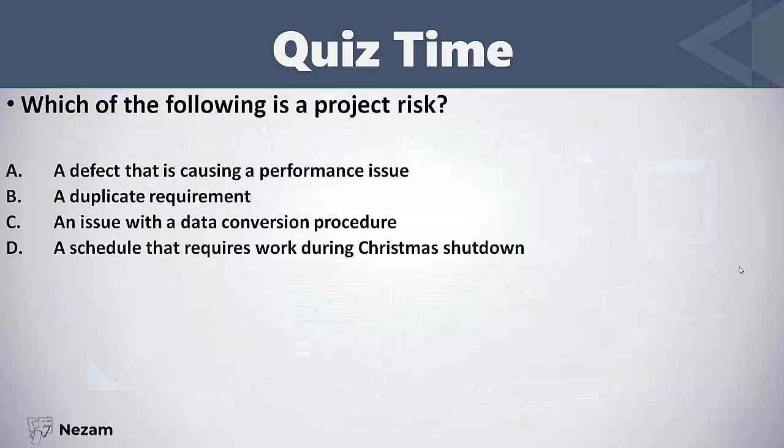Which of the following is a project risk? A defect that is causing a performance issue — this is a product risk. A duplicate requirement — this is a product risk. An issue with a data conversion procedure — this is a product risk.